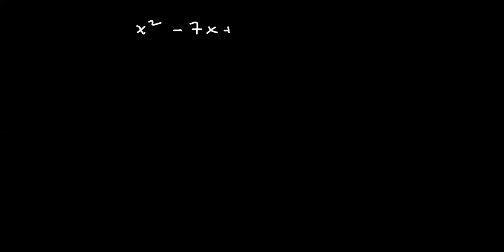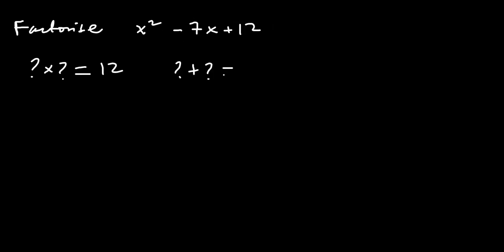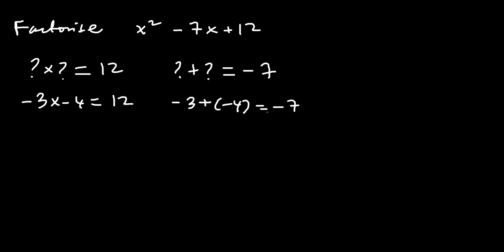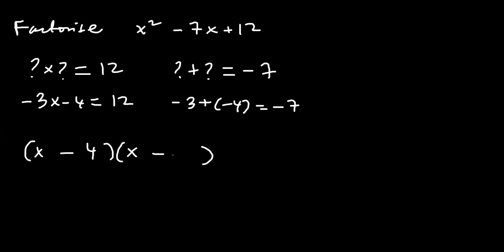Let's try factorizing x squared minus 7x plus 12. We're looking for two numbers that multiply to give 12 and add to give minus 7. I can see that minus 3 times minus 4 is 12, because negative times negative is positive, and minus 3 plus minus 4 is minus 7. So the two numbers are minus 3 and minus 4. You open two brackets and put minus 4 in the first and minus 3 in the other — the order doesn't really matter.